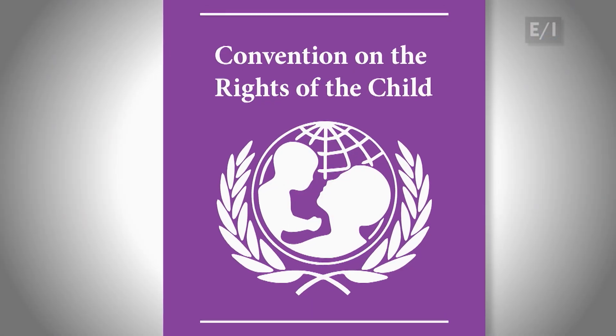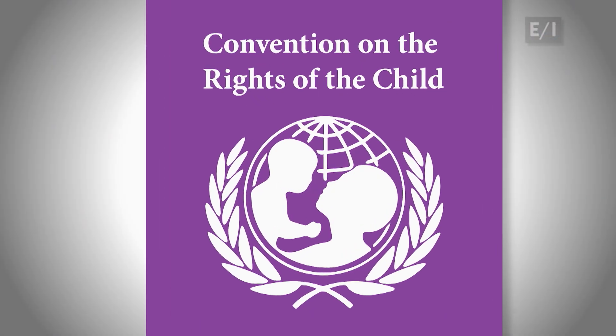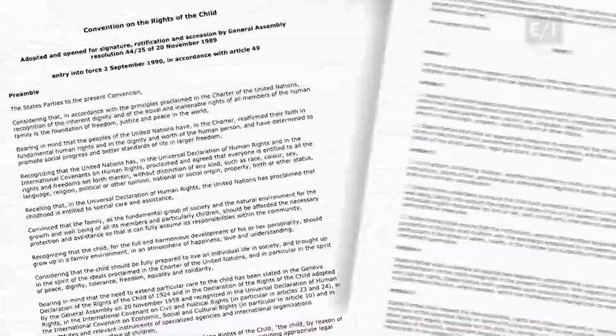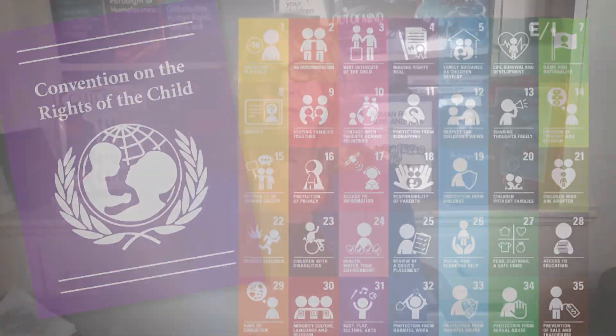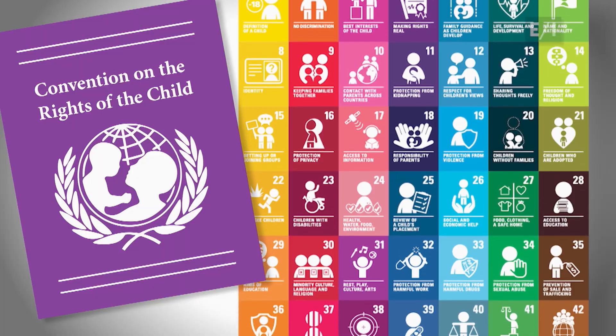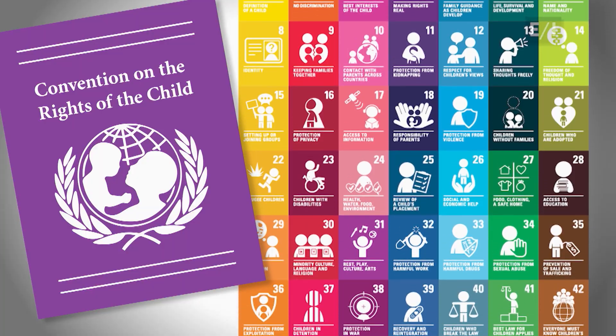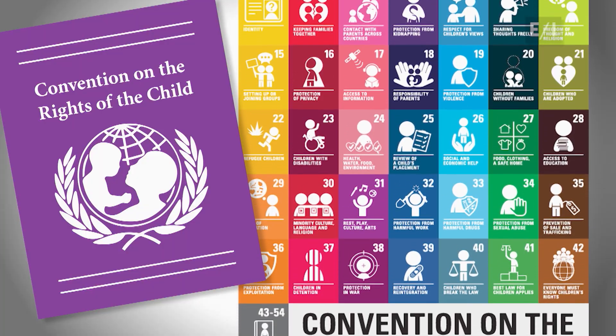And the CRC is certainly important. Back in 1989, the UN drew up what is basically an agreement to protect the rights of children. First of all, how do they define children? A child is defined as anyone under age 18. There are more than 50 rights listed in the CRC, and we discussed some of them the last time we spoke.